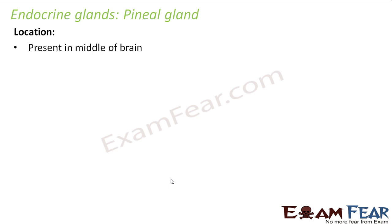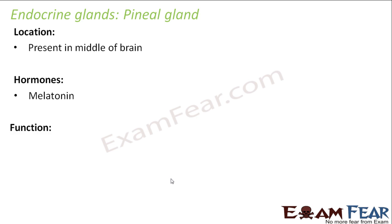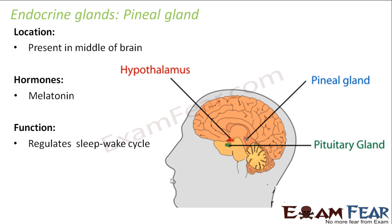The pineal gland is another gland which is present in the brain — specifically in the middle of the brain. The hormone secreted by the pineal gland is melatonin. Here, if you look at the position of the pineal gland, the blue colored gland is the pineal gland, located almost at the middle of the brain.